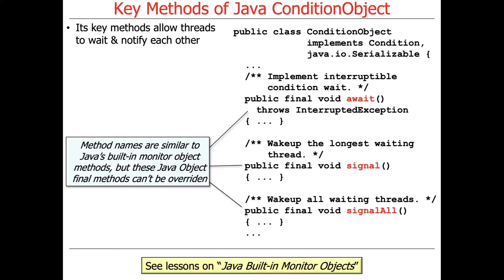These names are similar to the ones you get out of the box on Java Object, which would be wait, notify, and notifyAll. They're similar, but they have to be different. That's because the methods in Java Object — wait, notify, and notifyAll — are final methods, methods that cannot be overwritten.